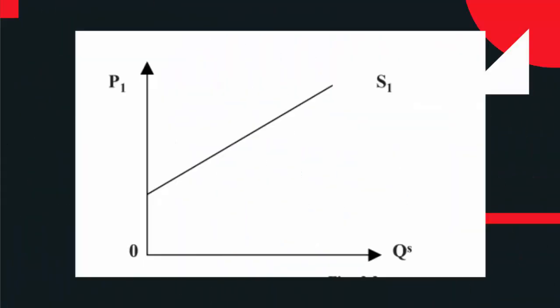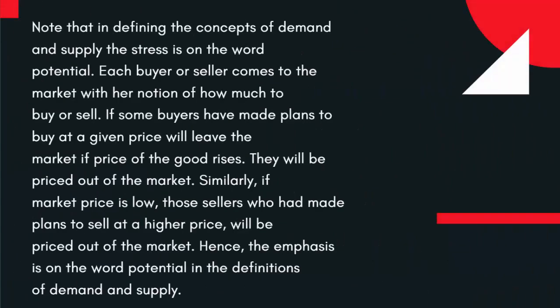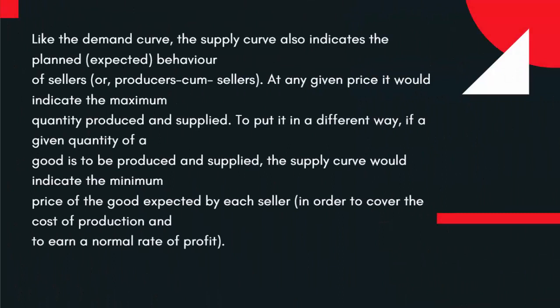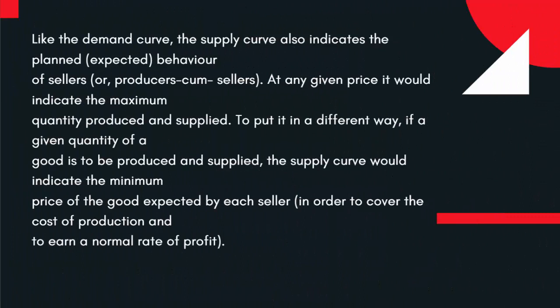Note that in defining the concepts of demand and supply, the stress is on the word potential. Each buyer or seller comes to the market with their notion of how much to buy or sell. If some buyers have made plans to buy at a given price, they will leave the market if the price of the good rises — they will be priced out of the market. Similarly, if market price is low, those sellers who had made plans to sell at a higher price will be priced out of the market. Hence, the emphasis is on the word potential in the definitions of demand and supply. Like the demand curve, the Supply Curve also indicates the planned, expected behavior of sellers or producers. At any given price it would indicate the maximum quantity produced and supplied.